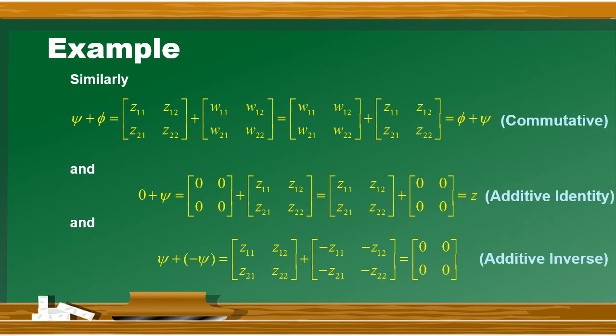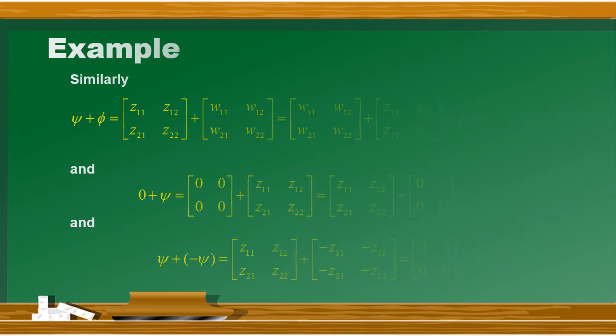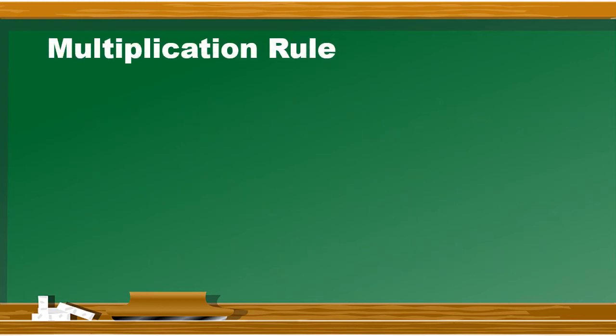तो यह addition rule से related different properties हैं. Associative property यहाँ पर mention नहीं की गई क्योंकि उसके लिए at least 3 vectors required होंगे. तो next अब चलते हैं multiplicative rule की तरफ.